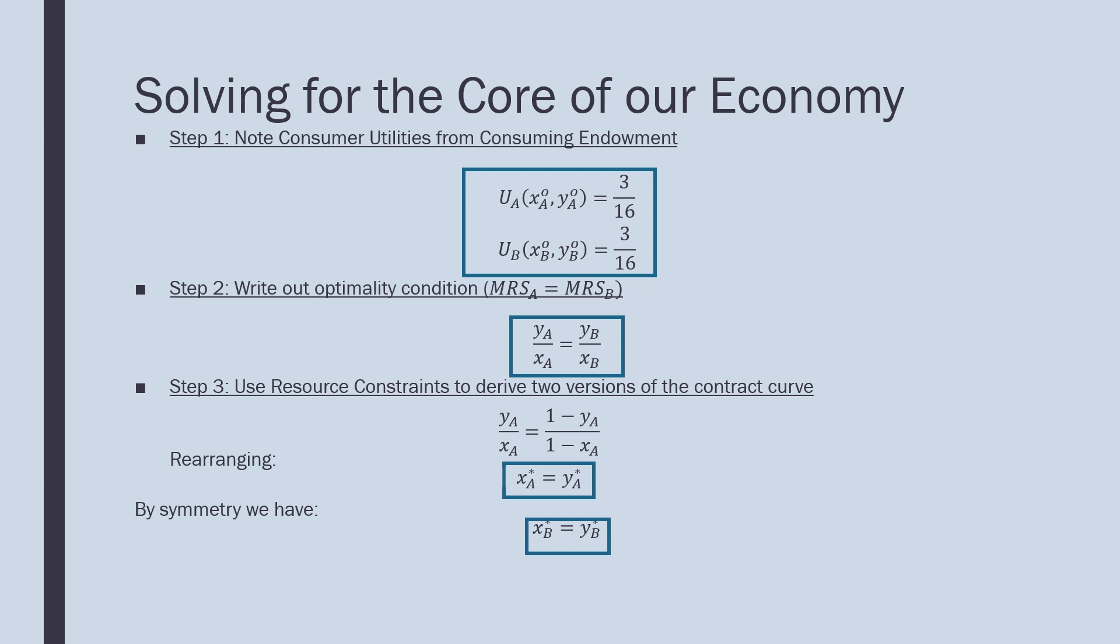Step 3: use our resource constraint to derive two versions of the contract curve. Using the resource constraint, we can rewrite yb and xb as one minus ya all over one minus xa. With a little bit of rearranging, we find that xa equals ya, and by symmetry of preferences, consumer B is going to be consuming in the same manner.